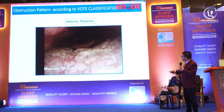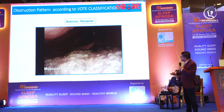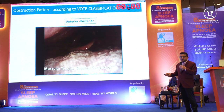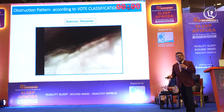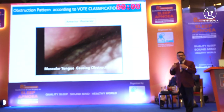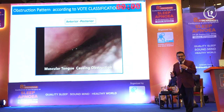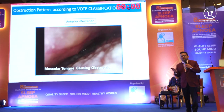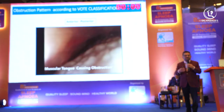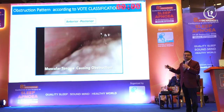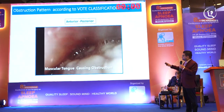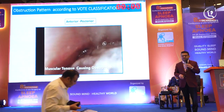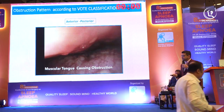If there is a big muscular tongue obstructing the larynx or the posterior airway, and we are doing only a tonsillectomy or lingual tonsillectomy, it doesn't matter — it won't be enough. This patient may need hypoglossal nerve stimulation.